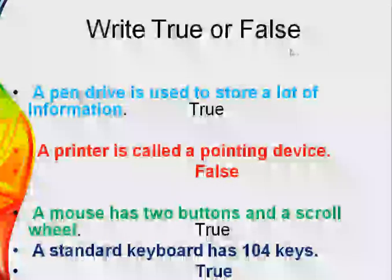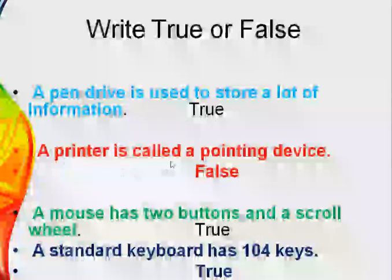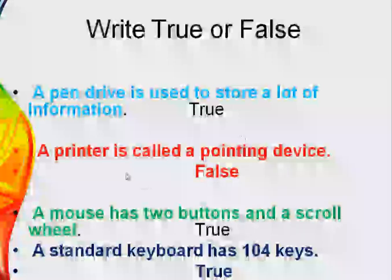True or false questions. First: A pen drive is used to store a lot of information — that is true. Second: A printer is called a pointing device — no, that is false. A mouse is called a pointing device, but a printer is not.